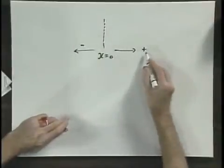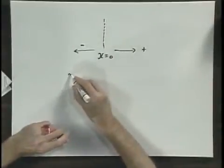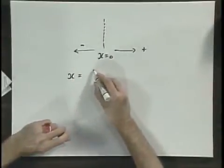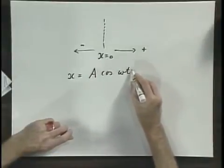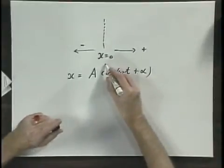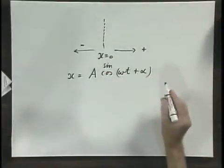If this motion of the object in the x direction can be written as x equals A times the cosine of omega t plus alpha, or it could be a sine, that makes no difference.